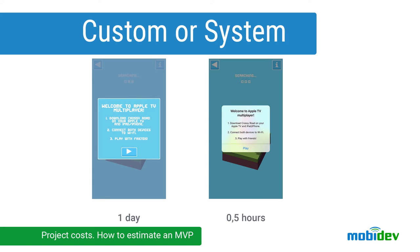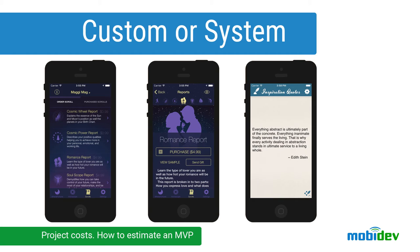If the estimate surpasses the budget, we can exclude the least important logical units. In some cases cutting functionality makes no sense — instead it's possible to simplify navigation, animations, and design an application using system UI elements and controls with minor customization of colors, backgrounds, and fonts. For example, Inspiration Quote by MobiDev and WebFortune are made mostly with standard controls — it's only background images that changed the application beyond recognition.